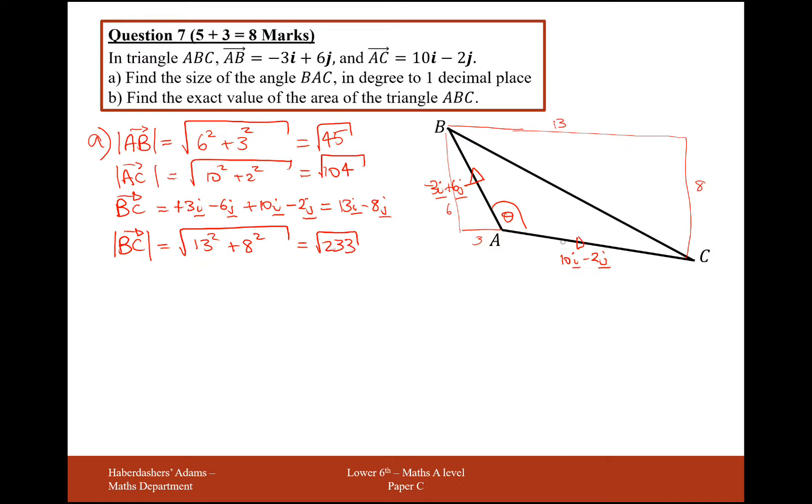So now that we've got all these sides here, now we can use the cosine rule. Remember the cosine rule is A squared equals B squared plus C squared minus 2BC cos A. We need to rearrange it to get cos A on its own. So what we need to do is add the term to that side, take away the A squared, so it would be B squared plus C squared minus A squared, and then divide by 2BC.